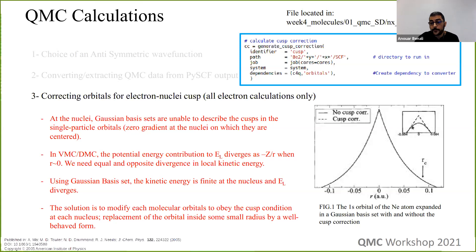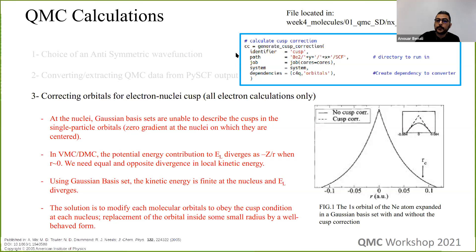The solution is to apply a correction: replace the cusp region with a known function whose derivatives we can compute. Fortunately you don't have to figure out the values — just add 'calculate_cusp' at the end of your Nexus file. All these blocks are in the provided file and you can follow them one by one. We are still working on the same Nexus file, building the calculation block by block, and now we're at the step of generating the cusp correction.